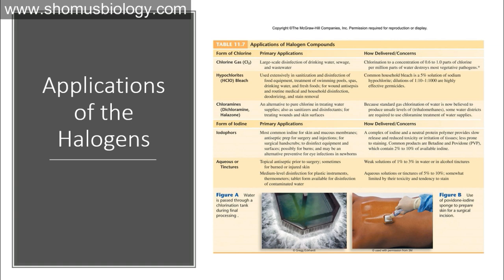Water is passed through a chlorine tank during final processing before releasing it for household use. There are different versions of chlorine: chlorine bleach and halazone. Iodine is mostly used as an iodophore, but can also be used in aqueous solutions or tinctures of iodine — a weak solution of 1% to 3% in water and alcohol — used as an antiseptic prior to surgery.